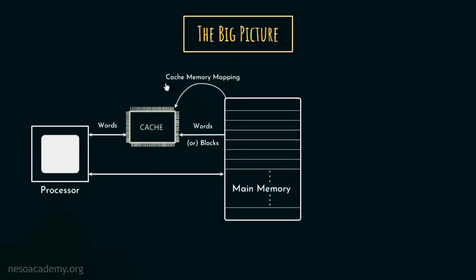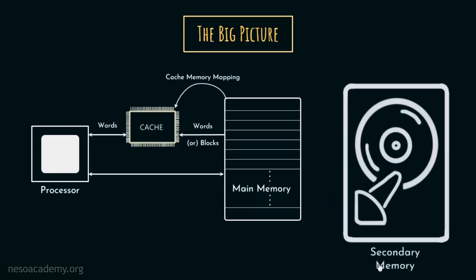We have also seen the various cache memory mapping techniques using which the main memory and the cache communicate. And we have also studied the architecture of primary memories in detail. But none of this — neither the cache nor the main memory (the RAM) — can store data permanently. So in order to store data permanently, the computer uses secondary memory.